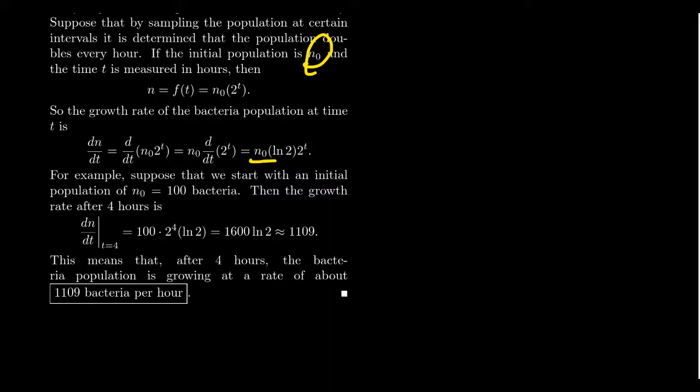This means that after four hours, the bacteria is growing at a rate of 1109, 1100 essentially when rounded. It's growing at a rate of 1100 bacteria per hour. So that means at four hours, it's like you're adding 1100 new bacteria every hour. But, of course, the more and more you get, the faster this is going, that this function, which is exponential growth, has also exponential growth rate. And so as the more and more this bacteria has to grow, the faster it's going because the derivative is measuring at this hour, at what rate are we increasing? And at four hours, it's increasing at a rate of about 1100 bacteria per hour.